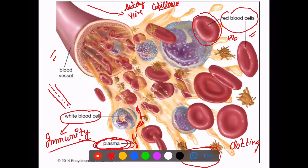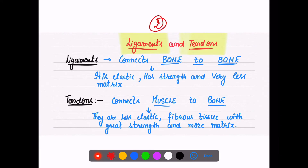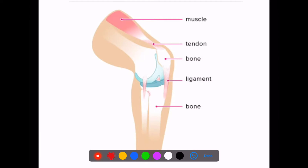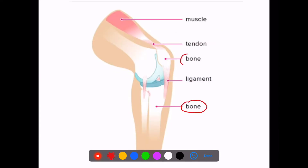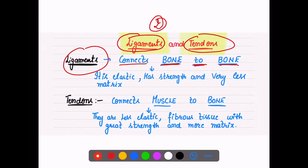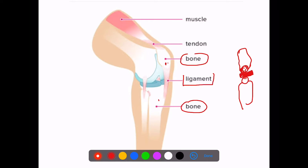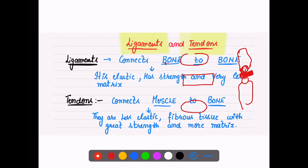That was our first connective tissue — blood. Now let's talk about the second: ligaments and tendons. Ligaments connect bone to bone. You can see this is one bone and here is another bone. These two bones are very hard and cannot join together directly. So there is a smooth surface which helps in joining bone to bone, and this is called your ligament.